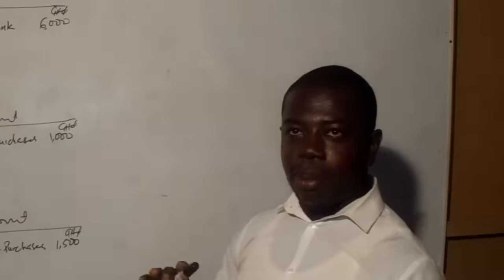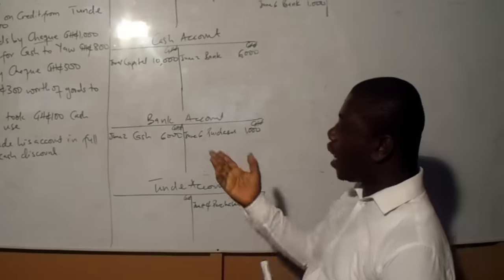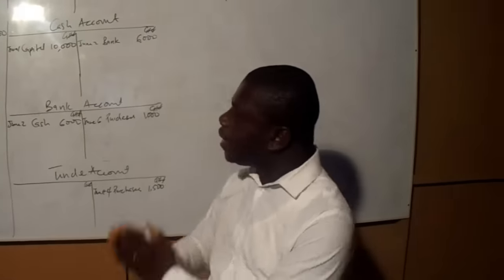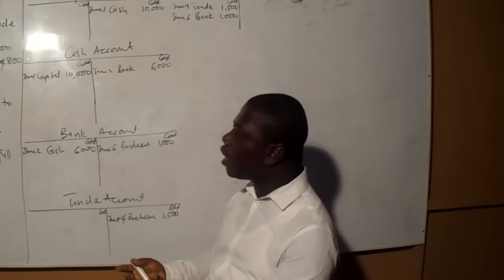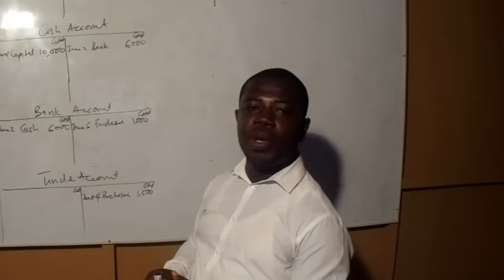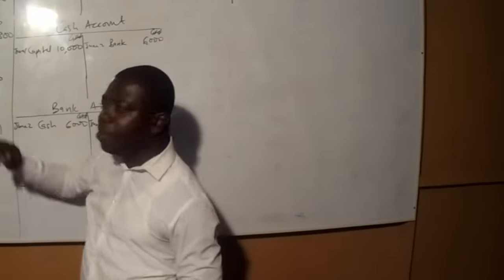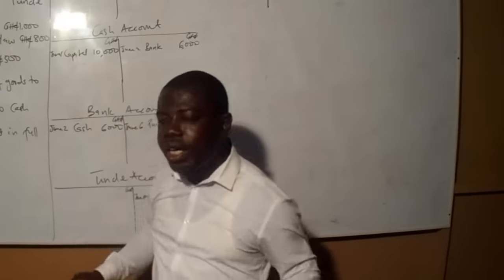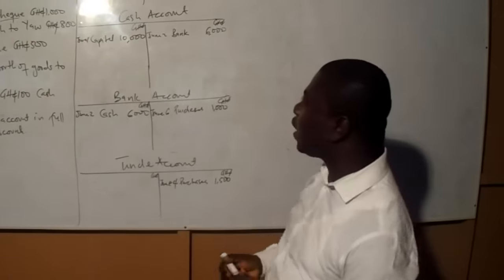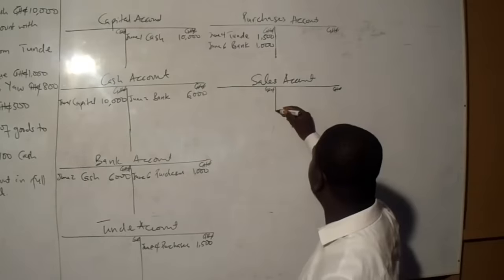Those are the dynamics of the double entry system. The next transaction: sold goods for cash, 800. Once we are selling goods, it is sales — sales is a disposal of stock. The two accounts are sales account and cash account. We do not open the buyer's personal account because this is not a credit transaction; it is a cash transaction. Even though a name may be mentioned, we only open a personal account if it is on credit. We already have cash account, so we open sales account.